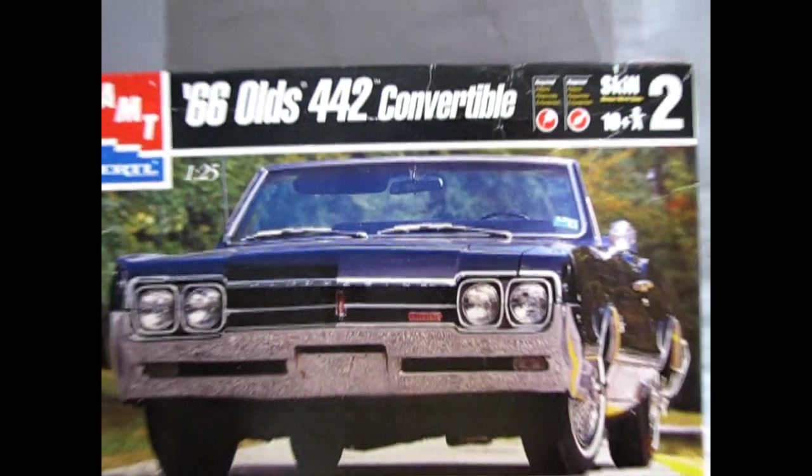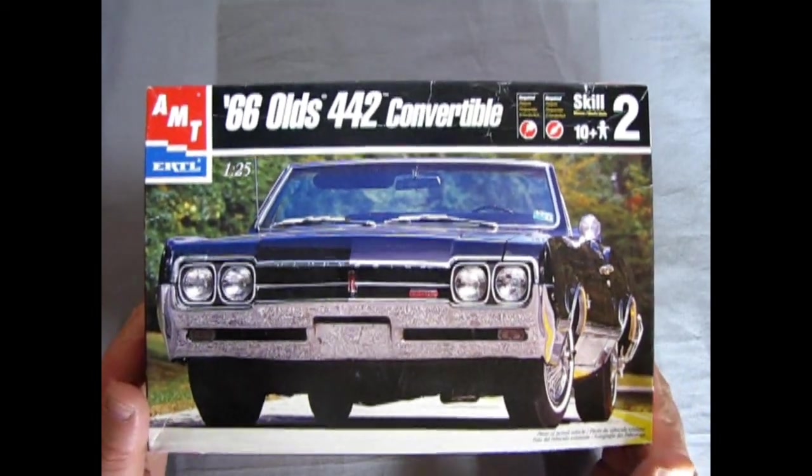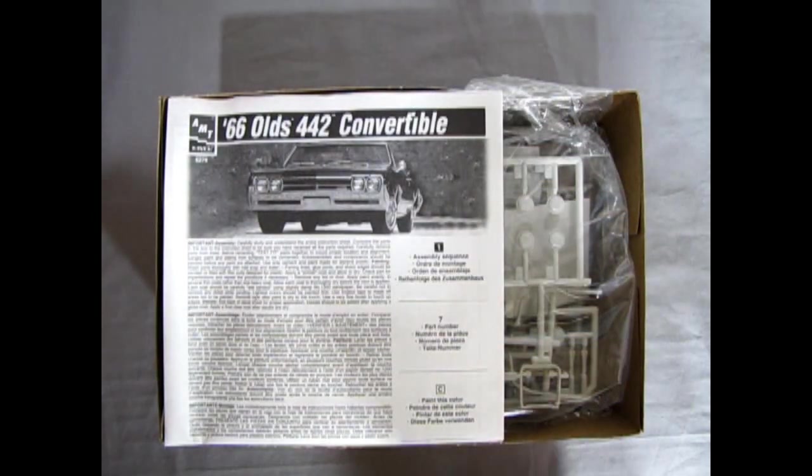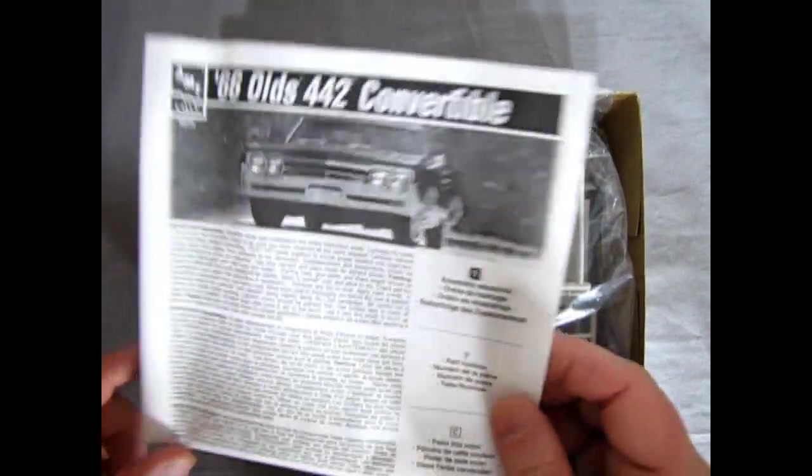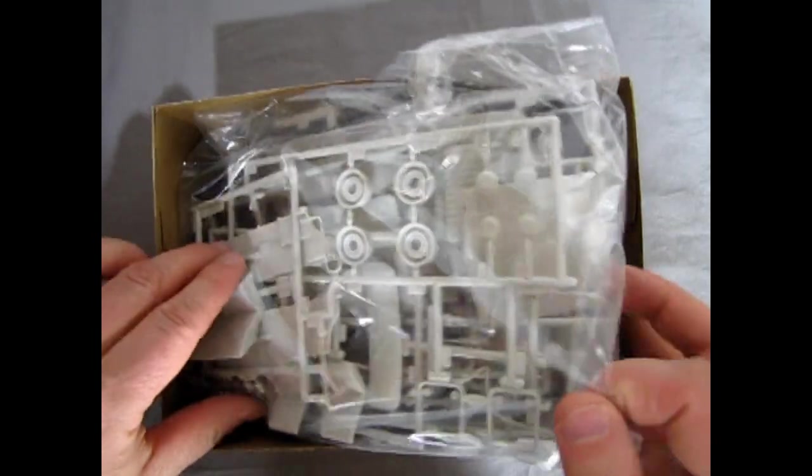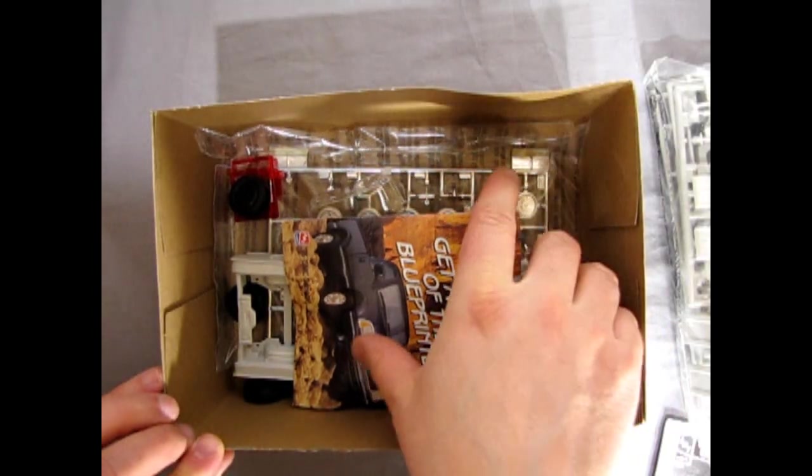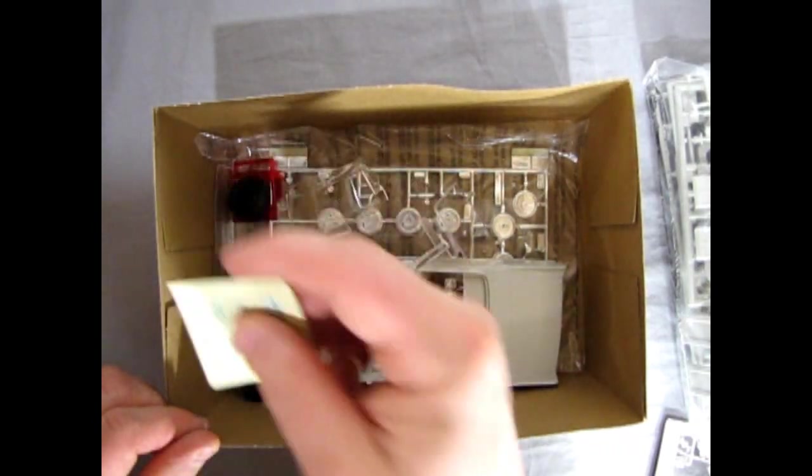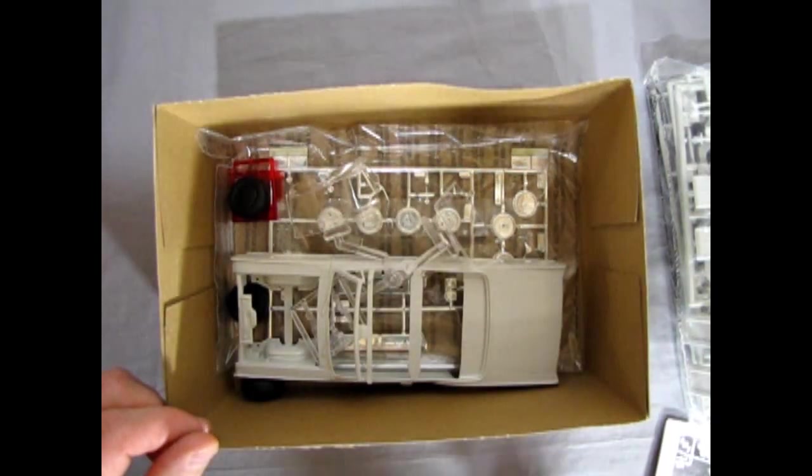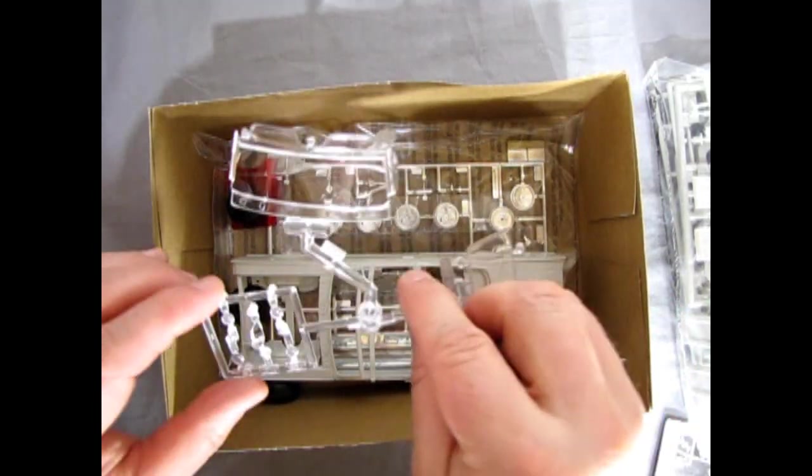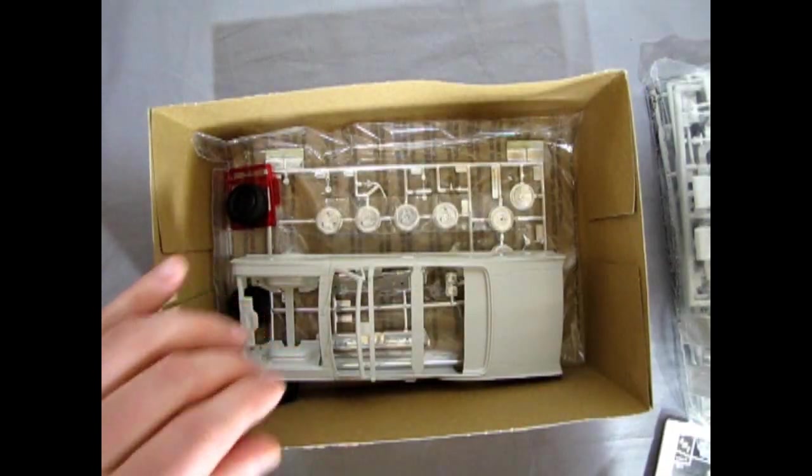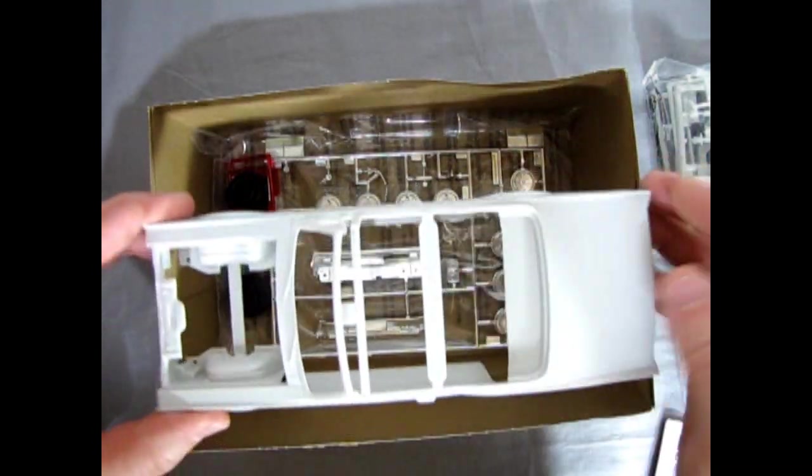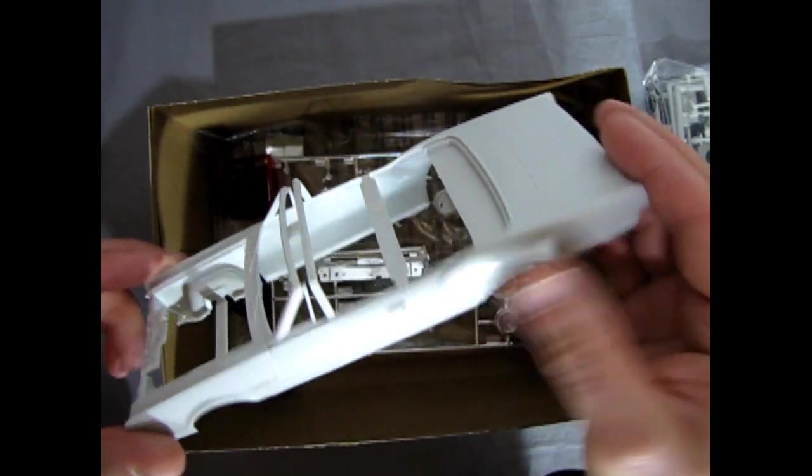So let's move our camera back here. We can take a quick look by removing the top, and here we see the Oldsmobile instructions. We have these bagged kits in here with pretty much all the parts in one big bag. We got a little invitation to get a taste of the Blue Printer. There's our decal sheets. We've got our glass just lying loose in there. There is the cutlass convertible body with those coke bottle fenders in it.